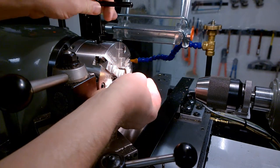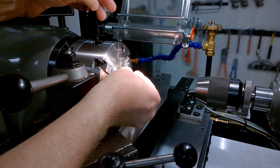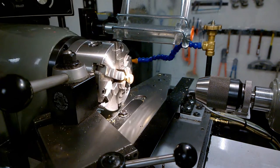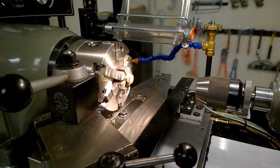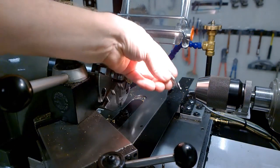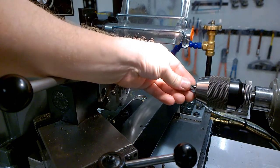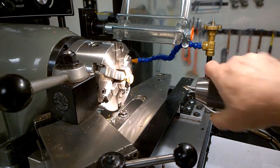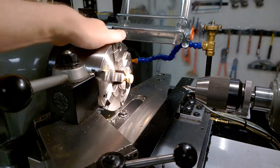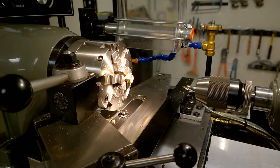I firmly secure the bolt into the six jaw chuck. Using a center drill, I make a pilot hole into the bolt. Before starting the lathe, I always rotate the chuck by hand to make sure it's not hitting against anything.